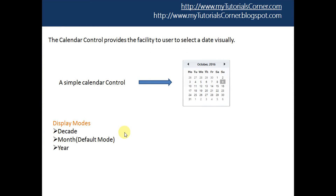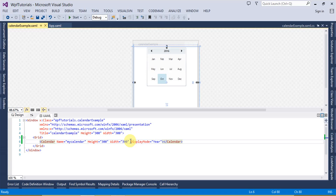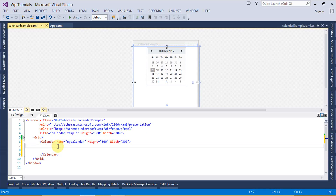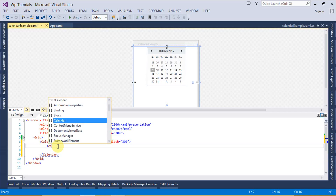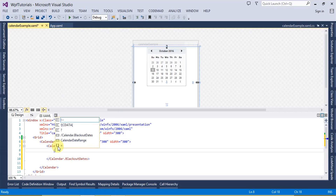Let's talk about another property of a calendar: Blackout Dates. Suppose you are in a company and the company is operational only from Monday to Friday, and the company doesn't want to display Saturday and Sunday as working days. The company can simply show these dates as blackout dates. By using this property we can set a range of dates which will not be available for selection. To do that, create CalendarBlackoutDates and inside that we will provide the BlackoutDateRange.